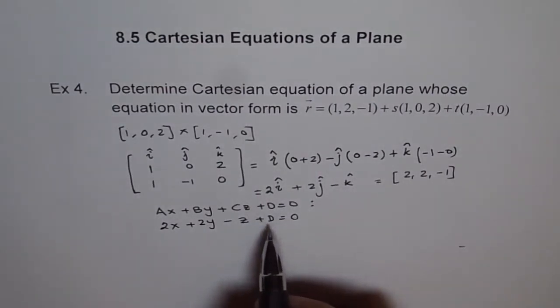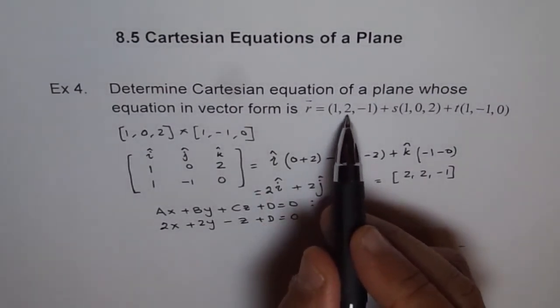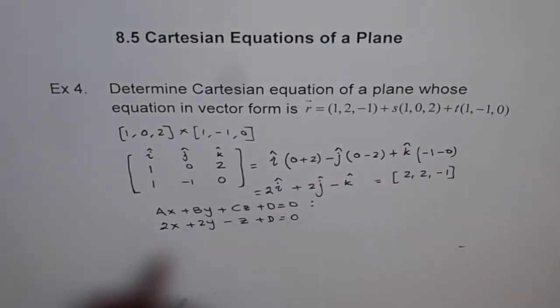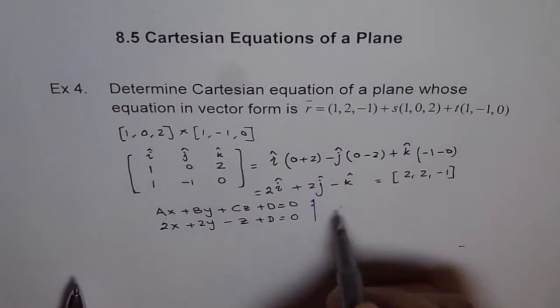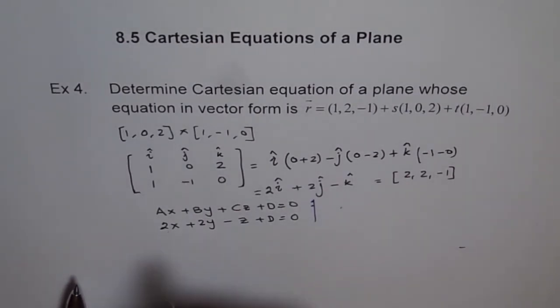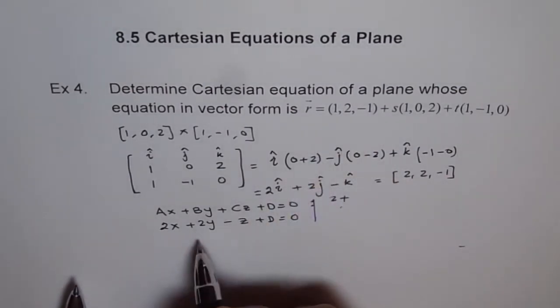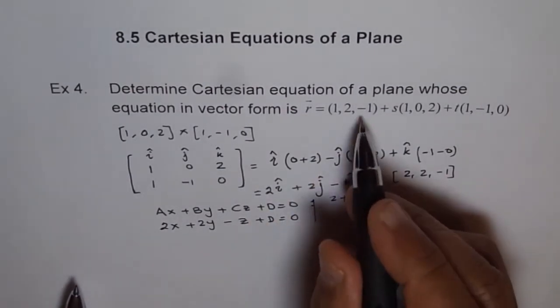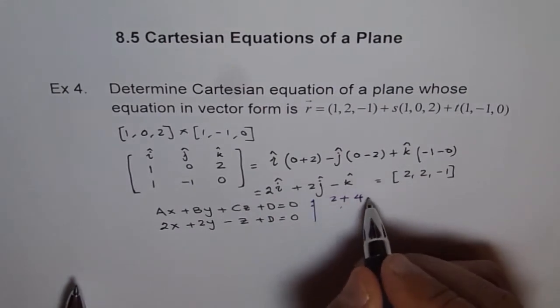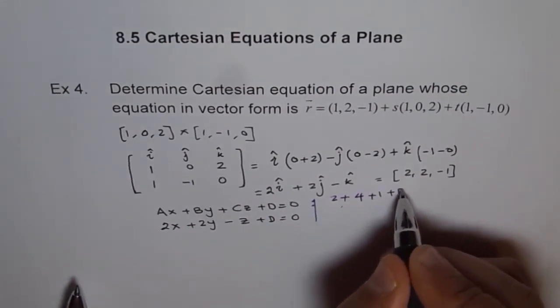Now, to find D, what are we going to do? We will use the point 1, 2, minus 1. So, if I wrote 1 here, then 2 times 1 is 2, plus 2 times 2 is 4, minus 1 times minus 1 is plus 1, plus D equals to 0.